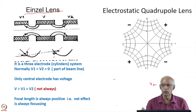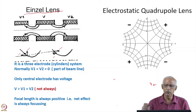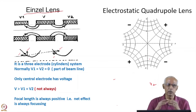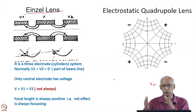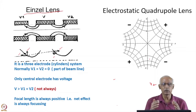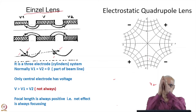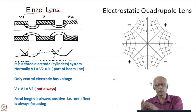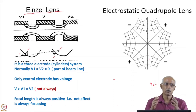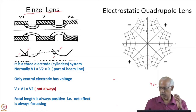The electrostatic quadrupole lens, like the magnetic lens, will focus in one plane and defocus in another. So they always have to be used in a doublet at minimum. If you want cylindrical symmetry of the beam, then you have to use a symmetrical triplet. If the first quadrupole is focusing in the X-plane and defocusing in the Y-plane, then the second quadrupole rotated by 90 degrees will defocus in the X-plane and focus in the Y-plane. So the effective focal length will be positive and the net effect will be focusing the beam.